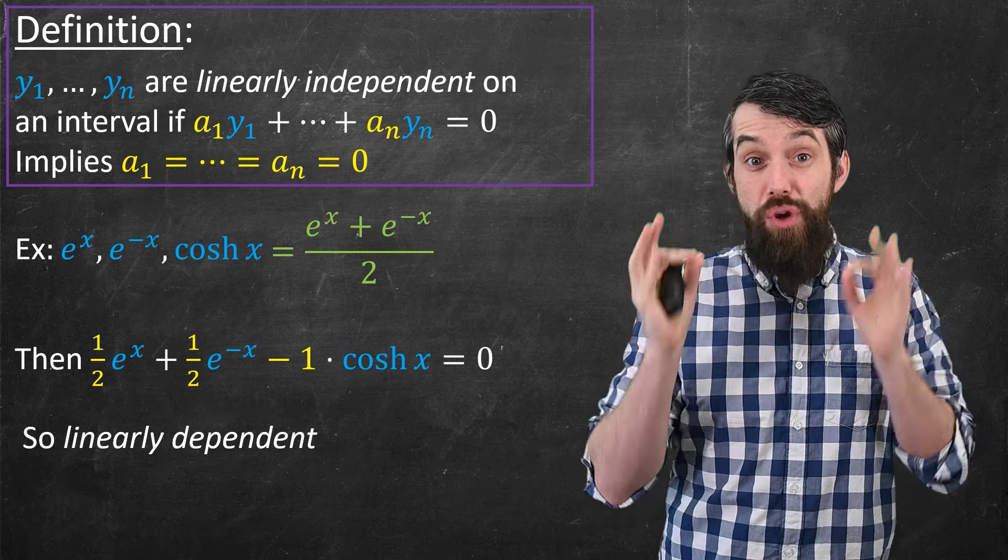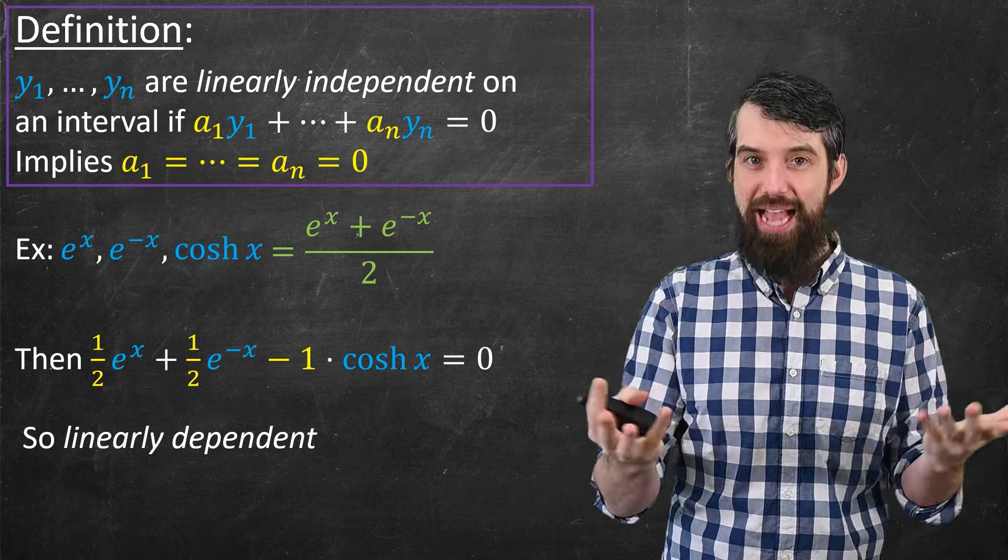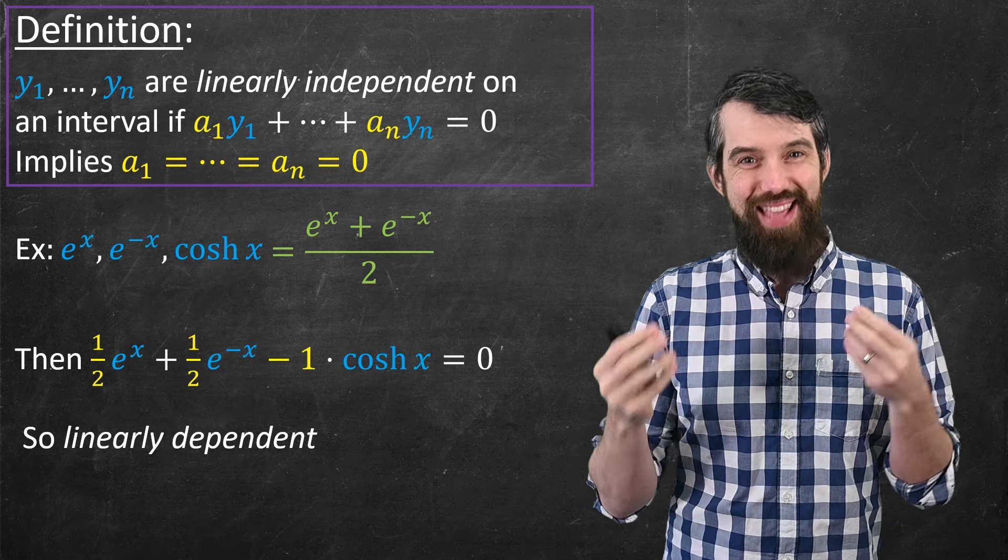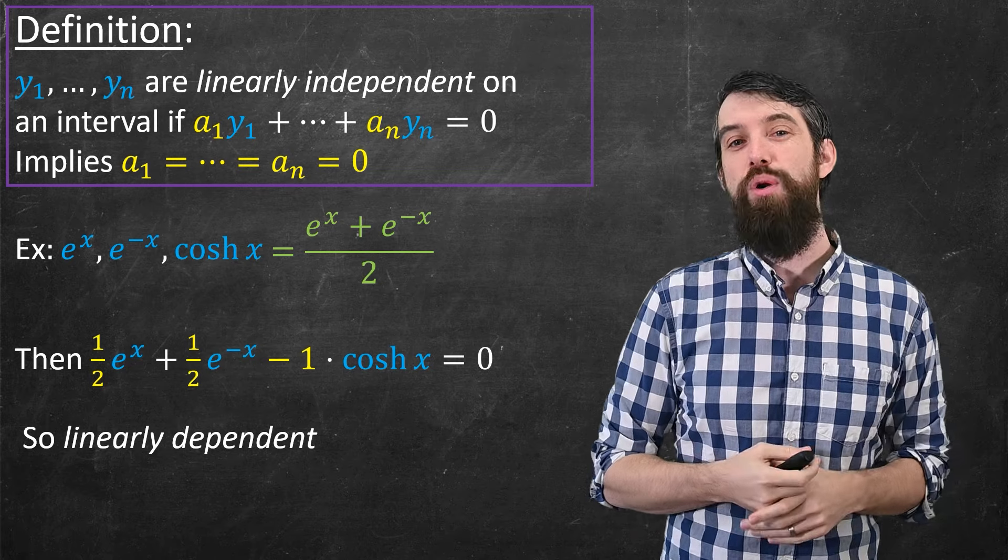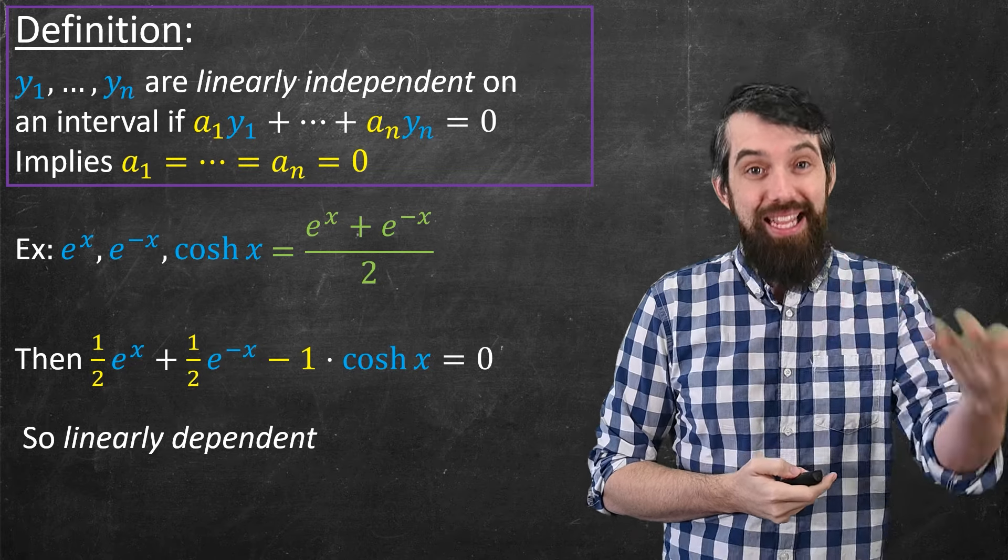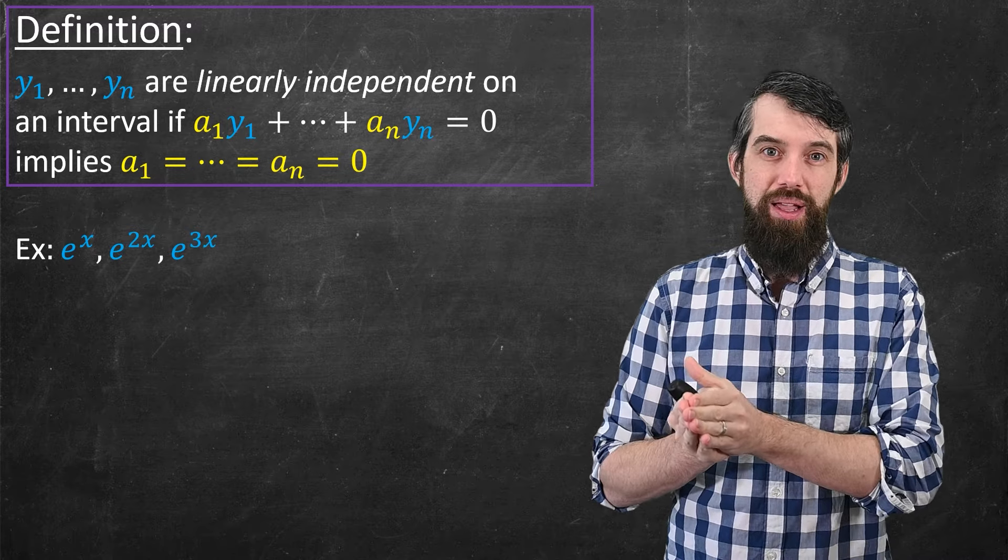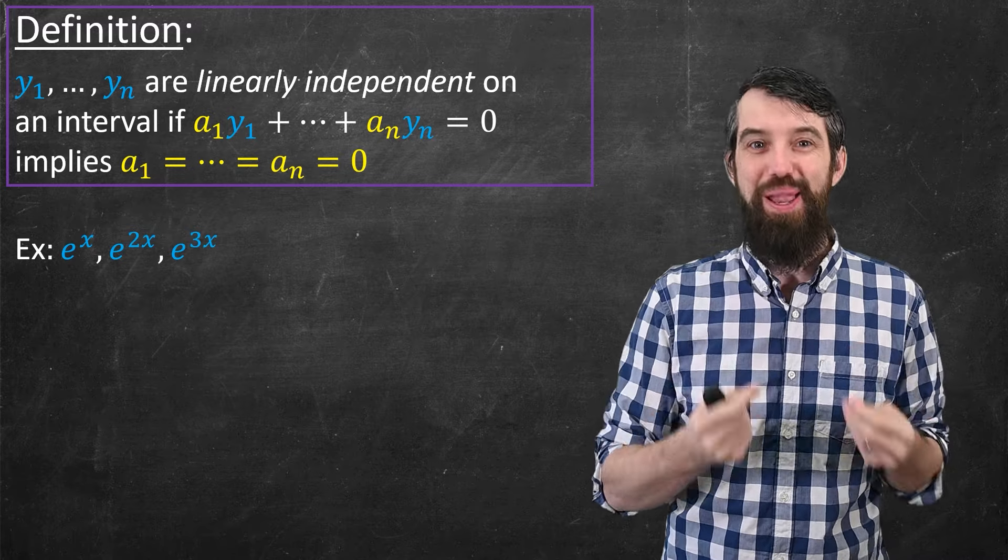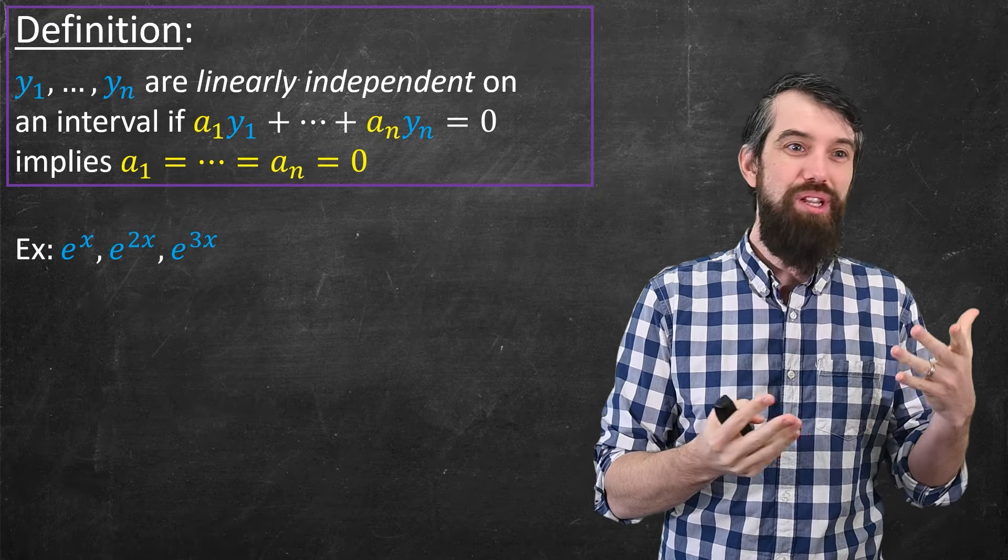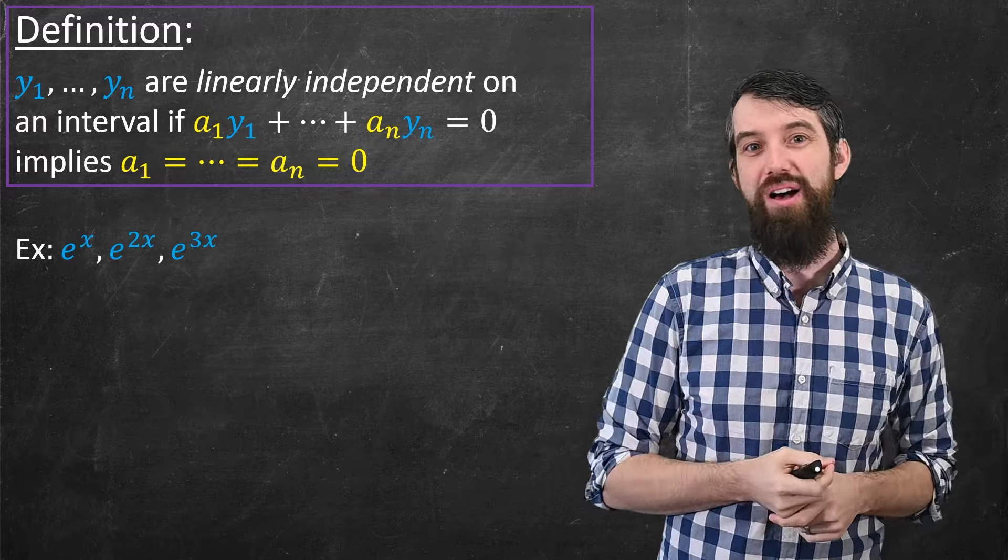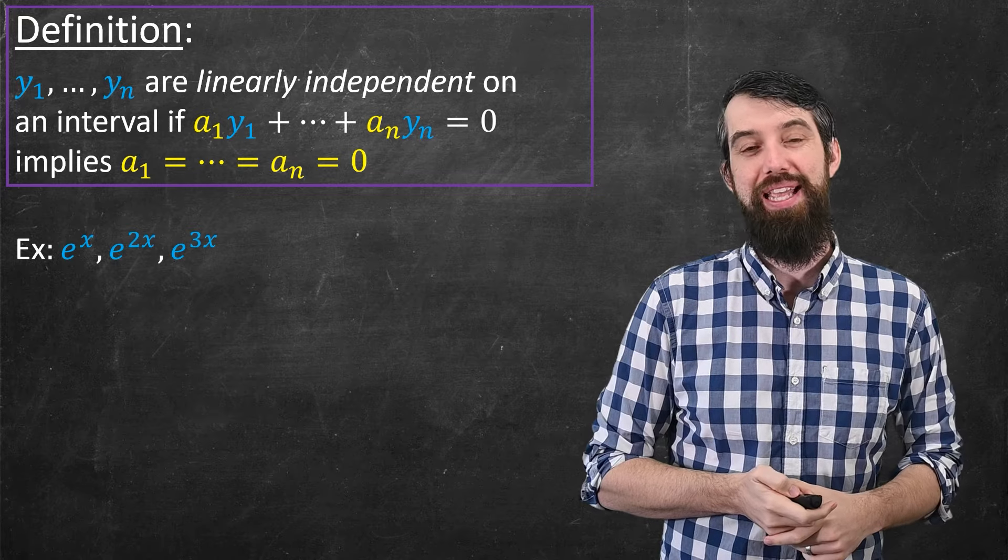So in that example, we have three functions that are linearly dependent. How would we show three functions are linearly independent? Like, for example, eˣ, e²ˣ, and e³ˣ. Now, it's going to turn out we're actually going to have to develop some new tools, which we'll talk about in this video, but sometimes you can use ad hoc methods. Ad hoc means it doesn't work always—it's specialized to this case.